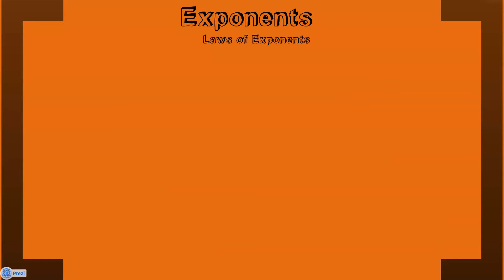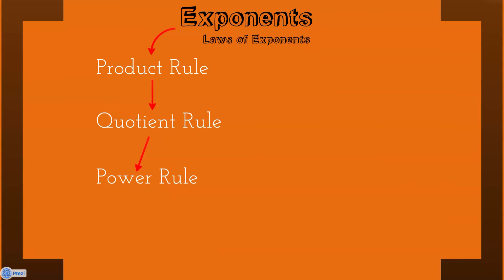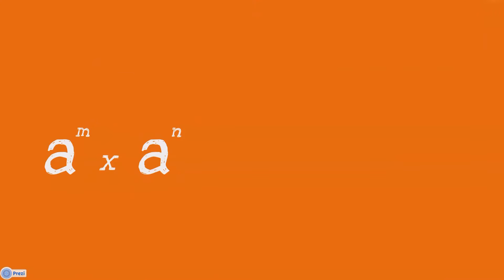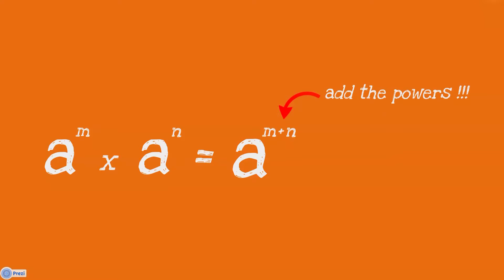These rules are the product rule, the quotient rule, and the power rule. Let us elaborate on the product rule. Given a to the power m multiplied by a to the power n will equal a to the power m plus n. We just add the powers. The bases must be the same.